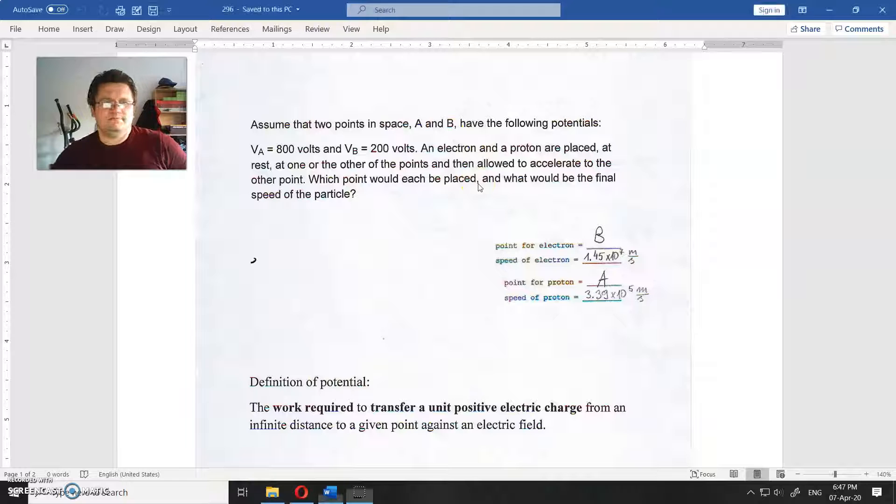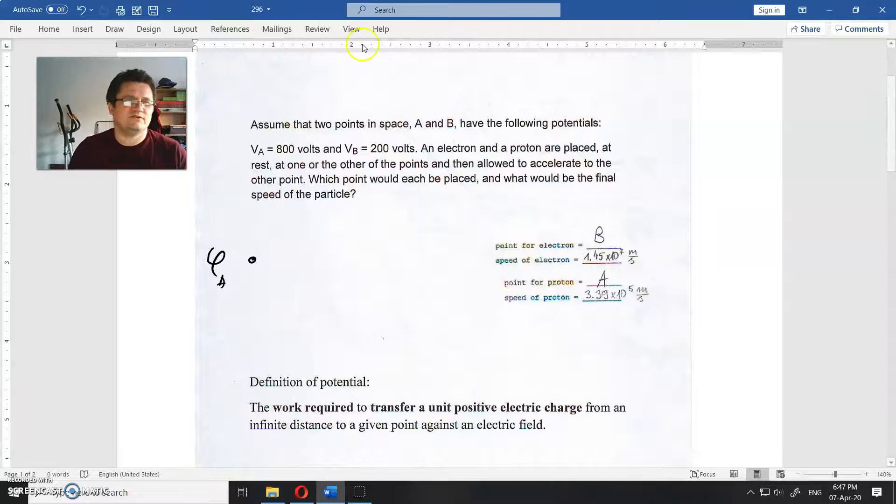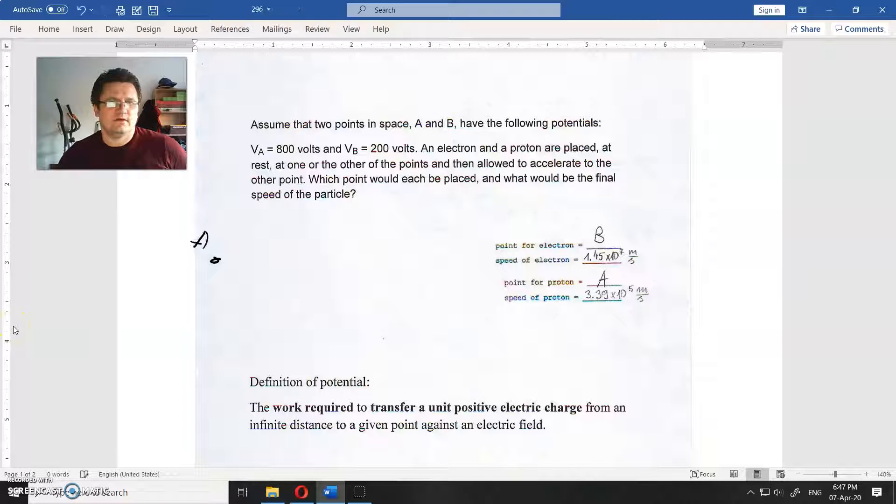So this is phi A, potential is in volts. This is point A, and VA is equal to 800 volts. And this is point B, and VB is 200 volts.